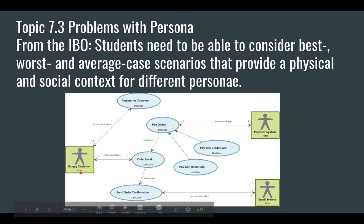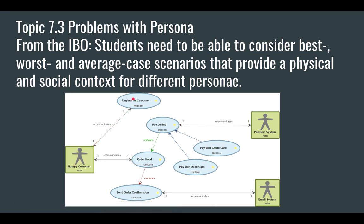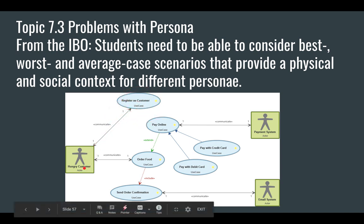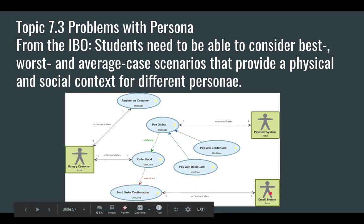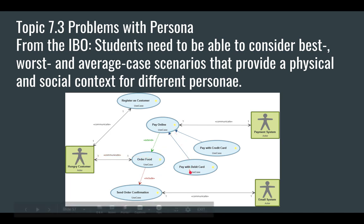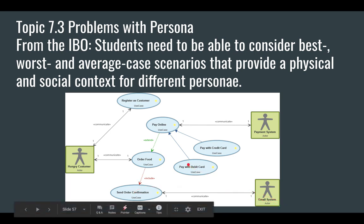These are called user case scenarios, and you represent the customer and the system with people to see how somebody would navigate through a system. For instance, you've got a hungry customer — that customer might register for a user account on your online ordering system, or they decide not to register and they just order food, pay online with a credit card or debit card, and it works. The food gets ordered, a confirmation is sent to the user by the email system, and then they get their food. Now imagine something goes wrong — you try to pay online, it won't accept your card. Those links would be broken, the food would not get ordered, the order confirmation wouldn't happen. That would be a worst case scenario.